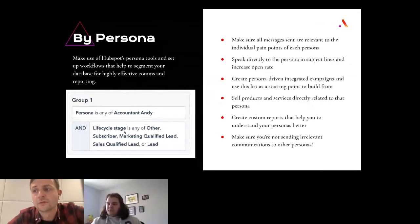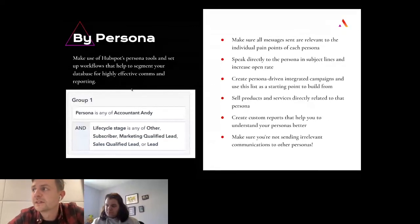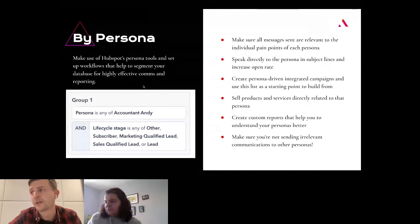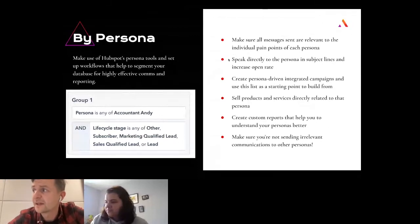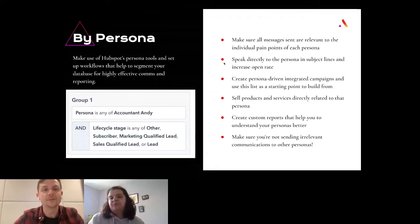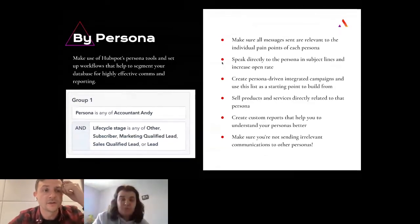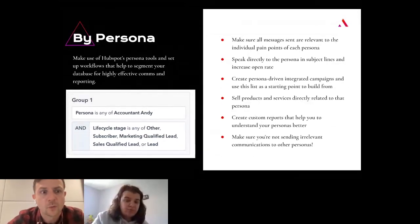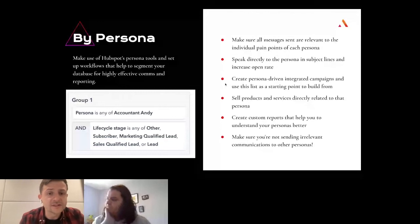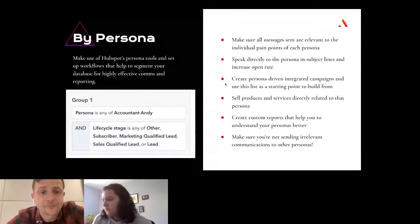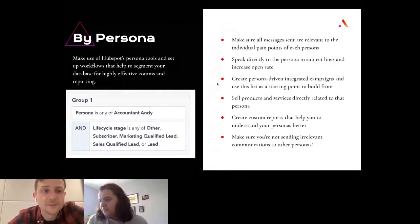We've also set the lifecycle stage to anything other than a customer — we want to talk to prospects and customers in different ways. So we have a persona list set up. The use cases: making sure all messages are sent to relevant personas, playing off individual pain points, making sure communications are super relevant. You can speak directly to that persona in your subject line to increase your open rate. When you're doing it by persona, you can speak to their pain points or what you know they'll be interested in, rather than trying to stay personalized across mass emails. You can create persona-driven integrated campaigns and build inbound campaigns based on specific personas.